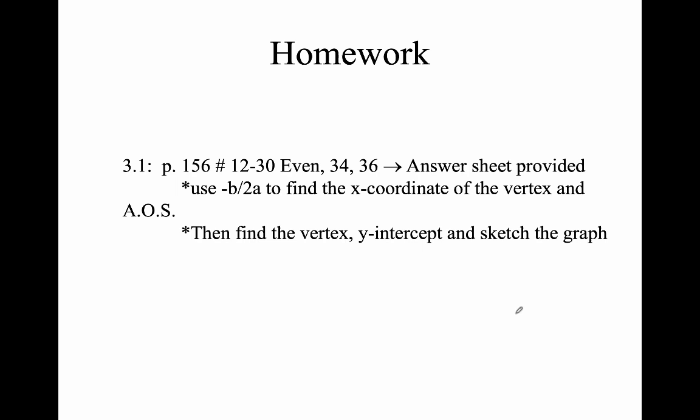For your homework, use negative b over 2a — even if it says to make a table of values, don't do that. Use negative b over 2a to find the x-coordinate of the vertex and the axis of symmetry, then plug that value in to find the vertex. The y-intercept is always (0, c). Then sketch the graph. You can do it — have a great day.